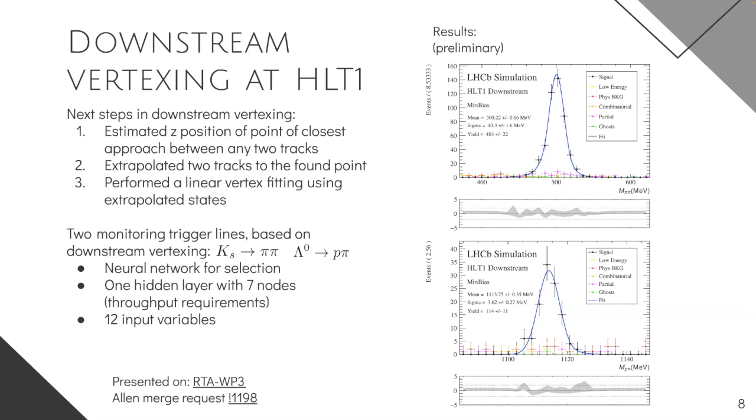So this monitoring trigger lines was actually based on the neural network. And because of the very tight throughput requirements, we used a quite small neural network, which used only one hidden layer with seven nodes in it. And in total, we had like 12 input variables. And what we get in the end after the both vertexing and the selection is shown on the right hand side plot. So this is the mass plot. And the blue line corresponds to actually to the signal of our K_short and our Lambda. So as you can see, it looks pretty well.